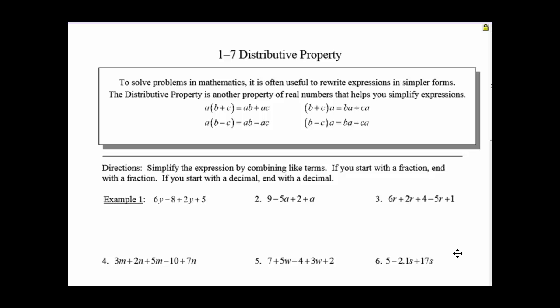To solve problems in mathematics, it's often useful to rewrite expressions in simpler forms, or sometimes go back from simpler to more complicated, and then you can rearrange. So the Distributive Property is another property of real numbers that usually helps with simplifying expressions. If you notice, we have A times and then parentheses B plus C. What we can do is we can distribute the A to the B and to the C by multiplication.